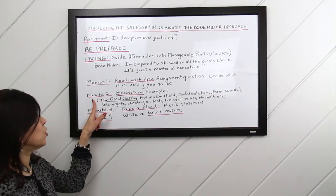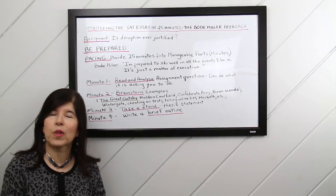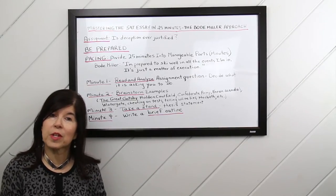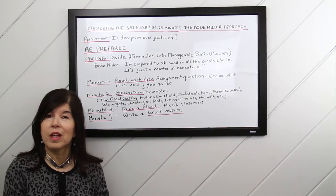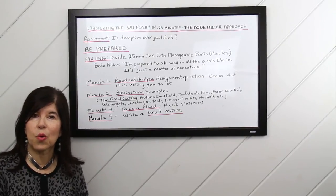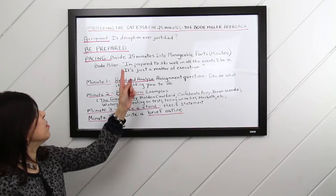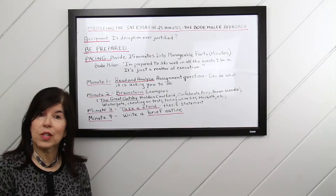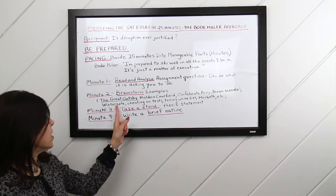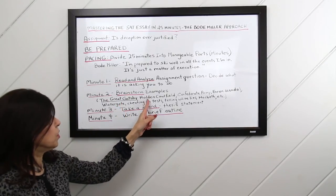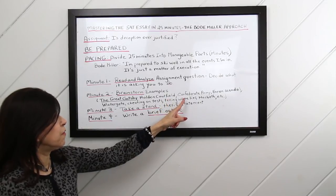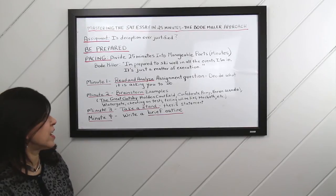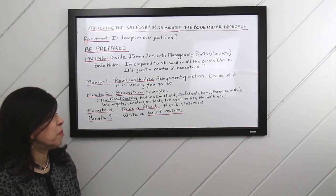Minute two is to brainstorm examples. Call forth a wealth of ideas and feelings that you might have. Jot them down. Maybe a pattern will emerge. Students who got a high score on the assignment question above, they brainstormed and they used examples such as The Great Gatsby, Holden Caulfield in Catcher in the Rye, The Confederate Army, The Enron Scandal, Watergate, Cheating on Tests, Telling White Lies, Macbeth, even The Boy Who Cried Wolf.